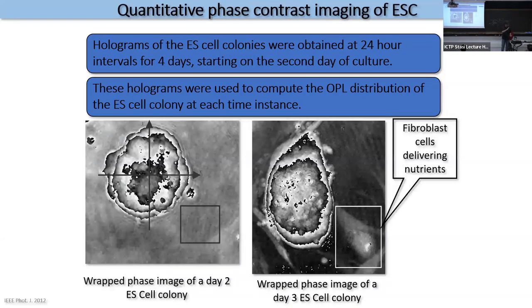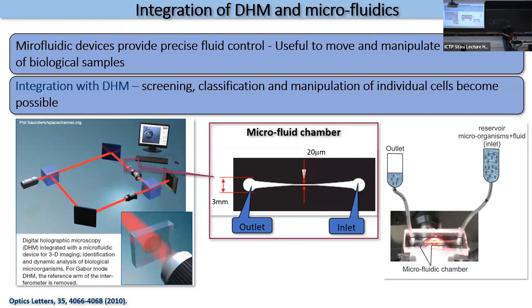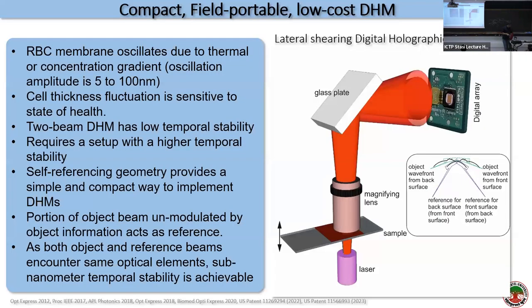Once you have the thickness profile, you can extract a large number of cell features, which I categorize into three groups: physical parameters from a single hologram; mechanical parameters from a time series of holograms (giving the fluctuation profile of the cell membrane); and optical parameters from illuminating the cell at different angles (tomography). We have also successfully integrated microfluidics into this device.